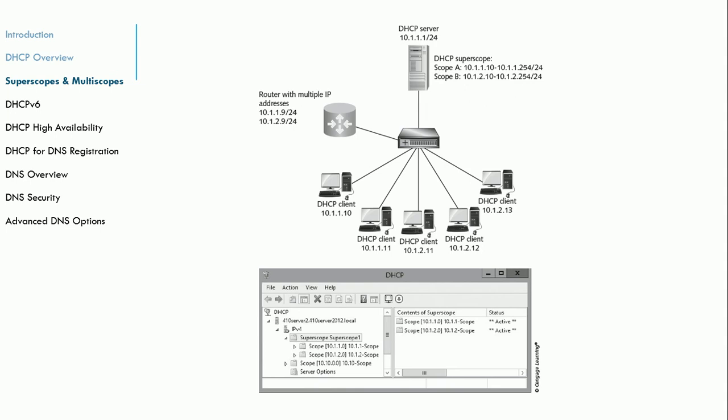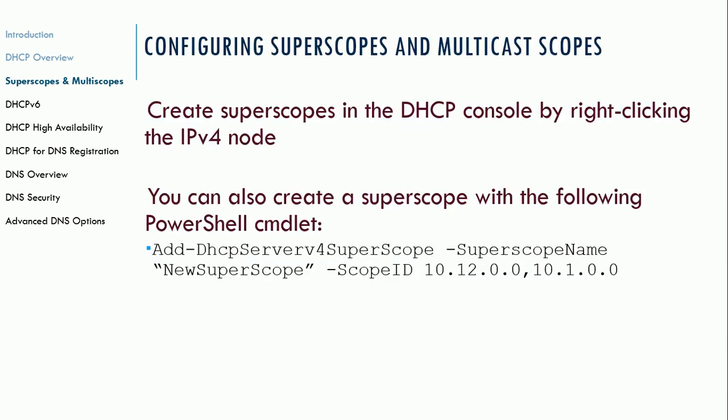Here's a simple example of what it might look like pictorially. You have two different subnets, and all the clients are able to request addresses. The DHCP server just determines which scope to hand out the IP addresses to. This is kind of a way to get around using Relay Agents, but Relay Agents seem like a much cleaner way to do this than trying to use Superscopes.